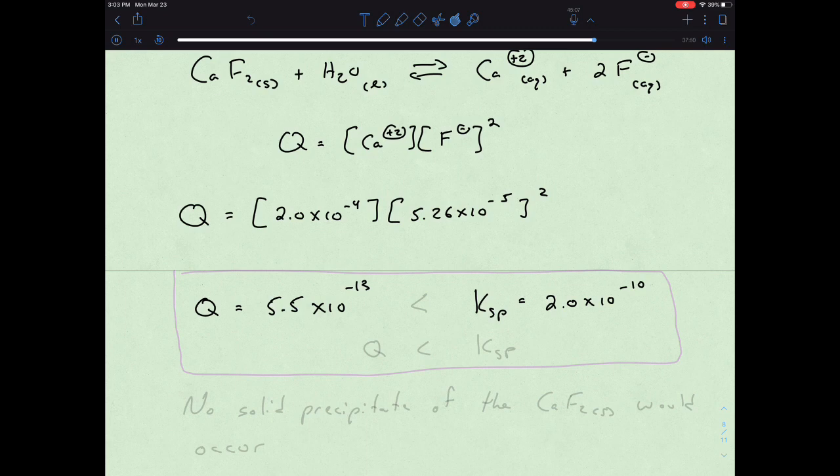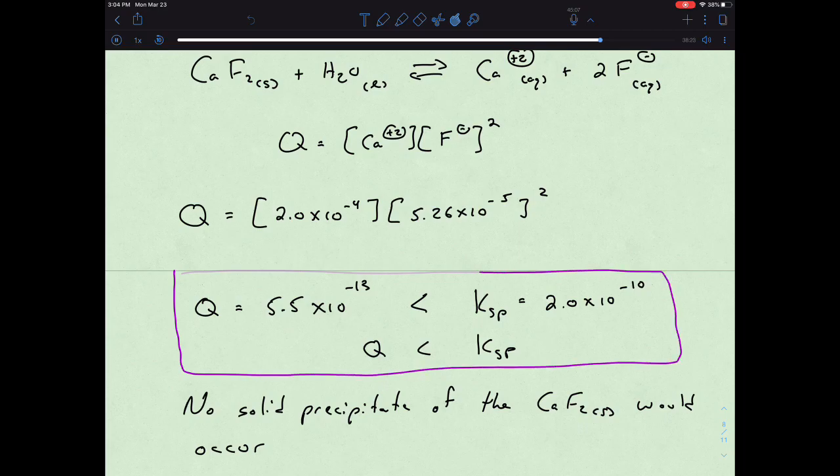And so what we find is that Q is much less than our Ksp. So that means that no solid precipitate of the calcium fluoride would occur. And that's simply by that relationship of Q versus Ksp. The question is pretty much the same, a solid for a Ksp, like we've done in the past. But it's just that we are not at equilibrium. So that is Q versus Ksp.